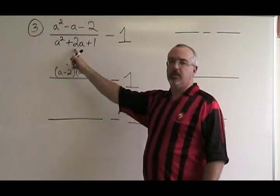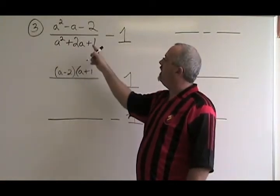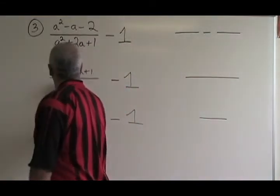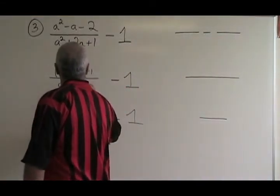The bottom is also a simple trinomial. What two numbers multiply to give 1 and add to give 2? They are 1 and 1. So we have a plus 1, a plus 1.